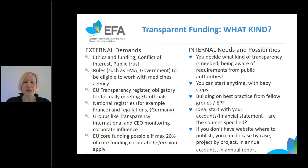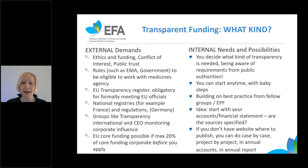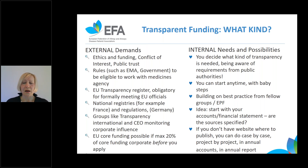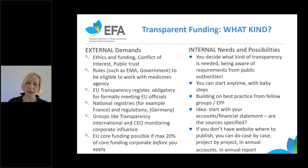What about our needs and possibilities as patient groups? You need to be able to decide what kind of transparency is needed for your organization, being aware of requirements from public authorities and funders. You can start anytime with baby steps and build on best practice from fellow groups like EPF. One idea is to start with your accounts and financial statements and look at whether they specify sources of funding. If you don't have a website you can do that case by case, project by project, in your annual accounts and annual report.